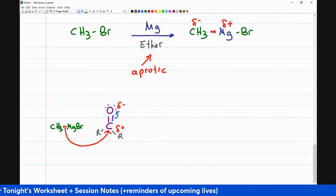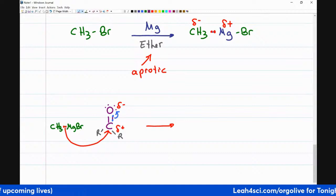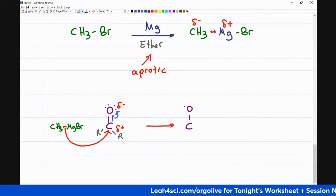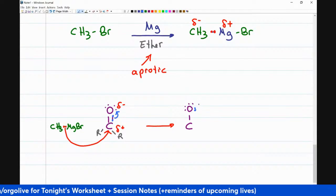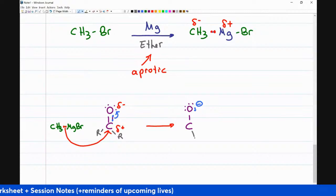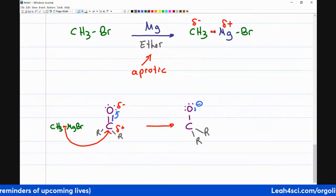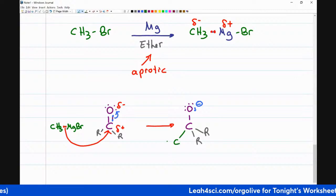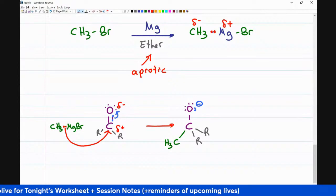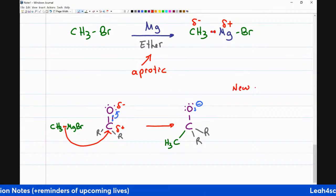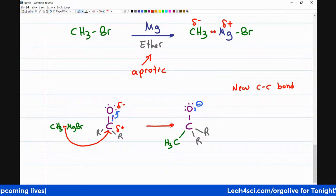The result: the carbonyl carbon now has a complete octet. We have the oxygen with a negative charge holding extra lone pairs from the broken pi bond, the two original R groups, and a brand new carbon-to-carbon bond from the incoming Grignard. This is why Grignards are so critical in synthesis — they give us a new carbon-to-carbon bond. In other words, this is a great reaction for chain elongation.